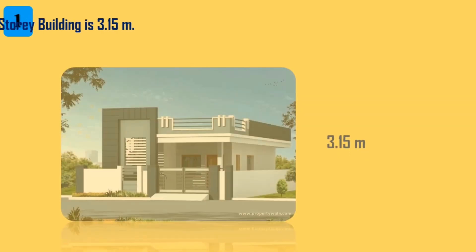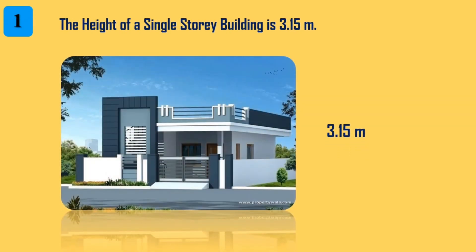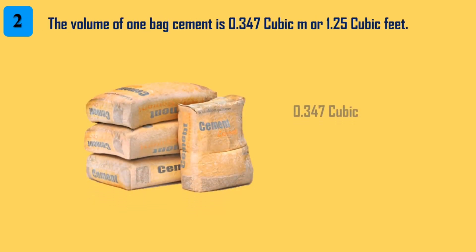1. The height of a single story building is 3.15 m. 2. The volume of one bag of cement is 0.347 m³ or 1.25 m³.